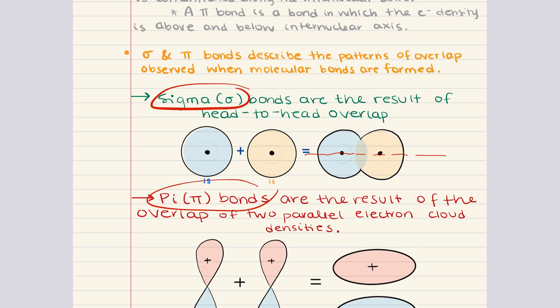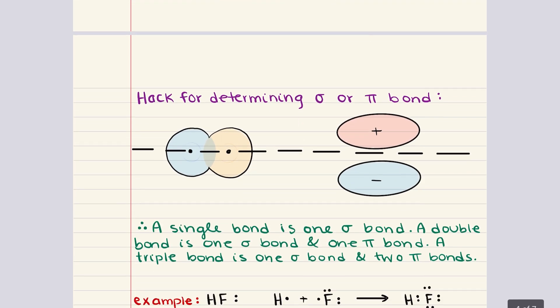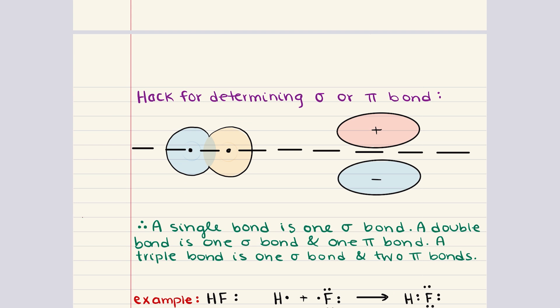Pi bonds form when orbitals overlap in a way that creates two parallel regions of electron density located above and below the internuclear axis. Pi bonds do not allow for free rotation because the electron densities of the orbitals are parallel and can't be twisted to allow continuous overlapping. A quick way to identify bond type: draw a line connecting the two nuclei. If the electron density is concentrated along the line, it's a sigma bond. If the electron density is located above and below the line, it is a pi bond.